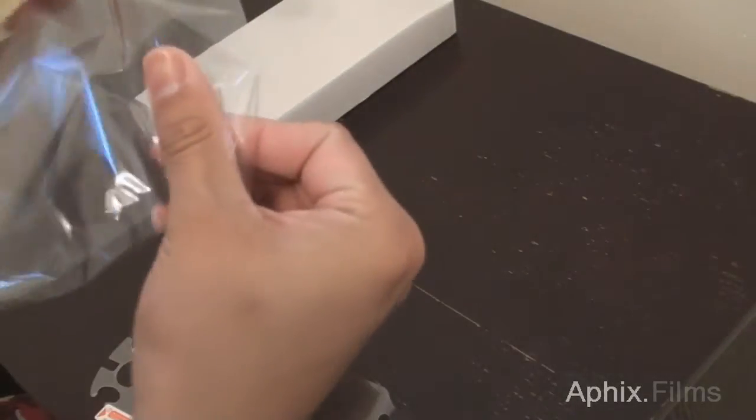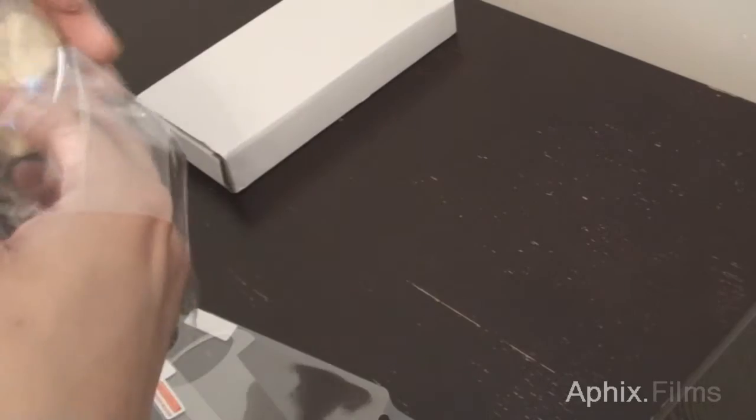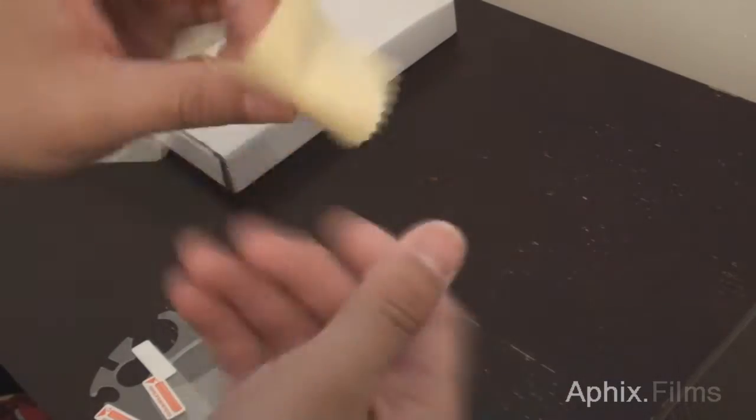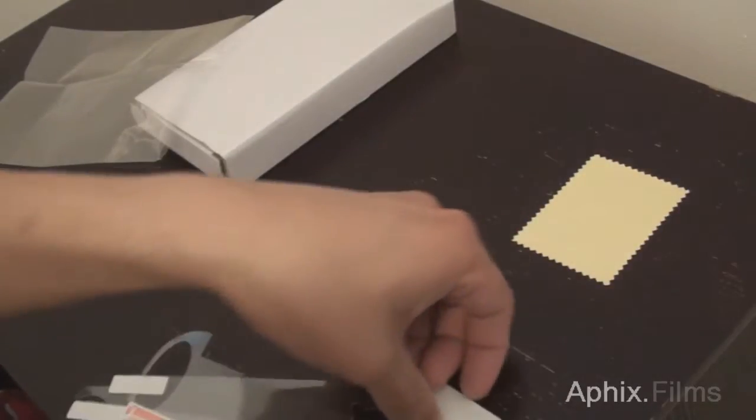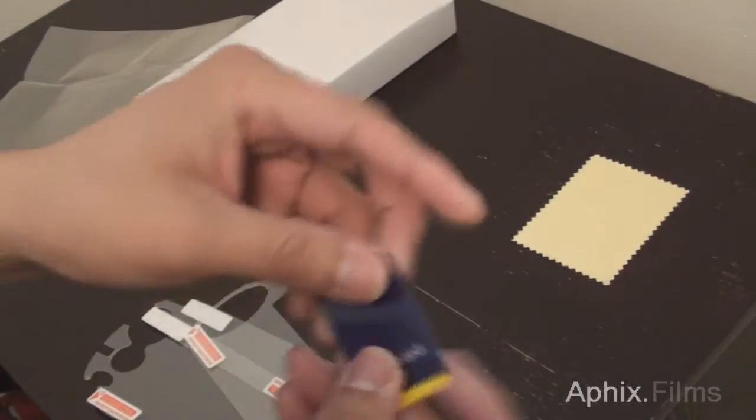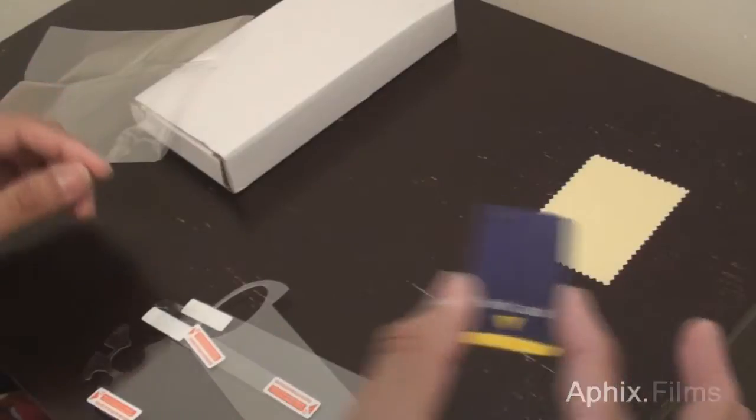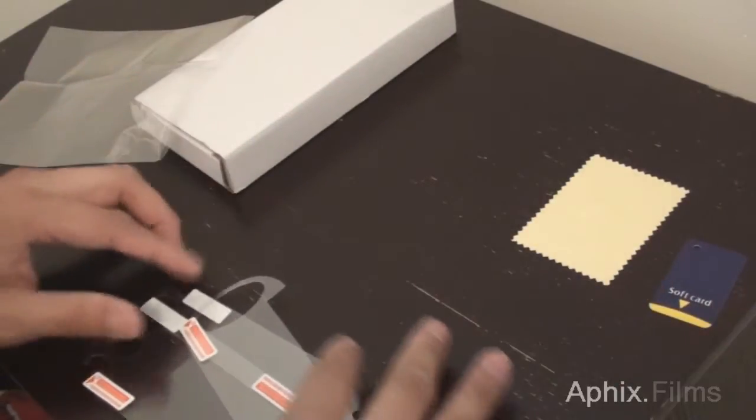First of all, let's take a look. You get a cleaning cloth, nothing too big, nothing too fancy, just your basic cleaning cloth, and a soft card for when you're going to apply the film to your Vita.